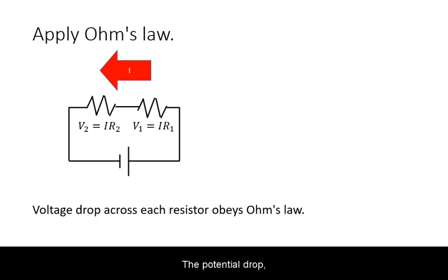The potential drop or voltage across any resistor in the current will still obey Ohm's law. Because the current is the same, that voltage will be directly proportional to the amount of resistance in each element.